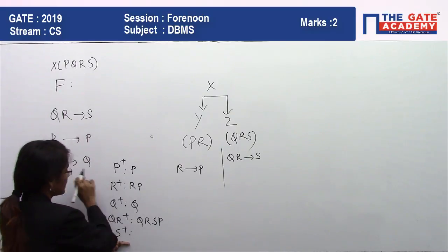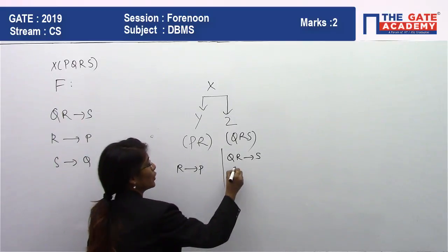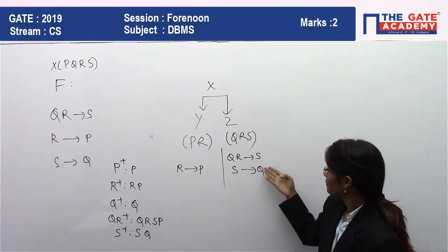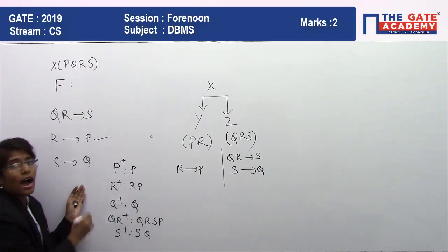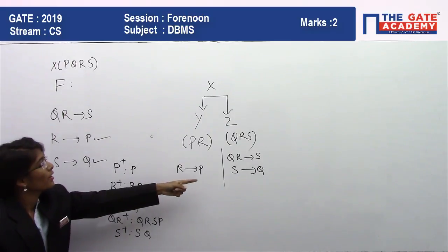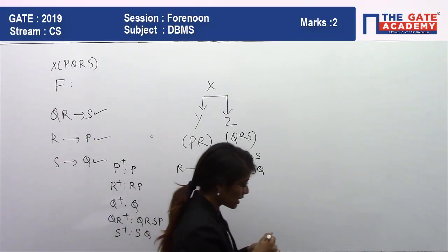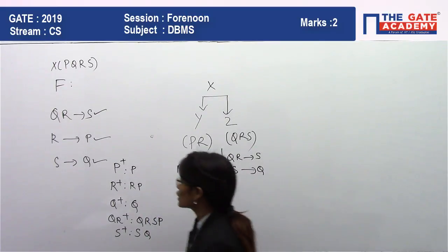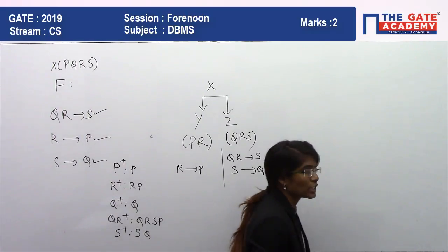Closure of S: S → Q. So the functional dependencies derived are R → P (from table Y), S → Q and QR → S (from table Z). We are getting all these functional dependencies preserved, so the decomposition is dependency preserving.